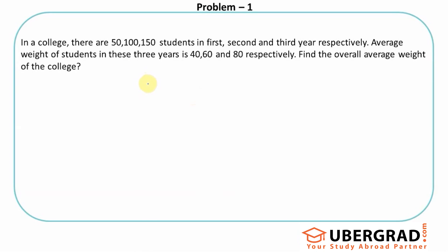This question is the example to show that the formula for the weighted average is not only valid for two groups, it can be more than that. So first year, second year, third year, the number of students is 50, 100, 150, and the attributes they have talked about is weight, so that's 40 kg, 60 kg, and 80 kg.